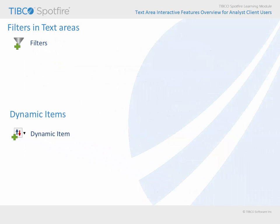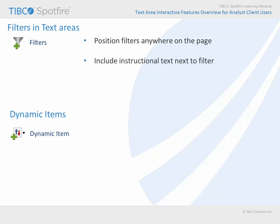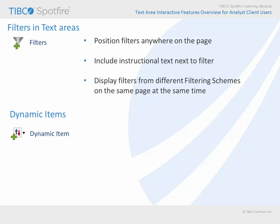You may include filters in text areas rather than the filters panel. Presenting filters in text areas may provide several advantages. First, filters in text areas can be positioned pretty much anywhere on the page, and because they are presented in a text area, you can position them right next to instructional text or images and make them an integral part of the workflow directions. In addition, inserting filters into text areas affords the capability to display filters from different filtering schemes on the same page at the same time, something which cannot be done within the filters panel.